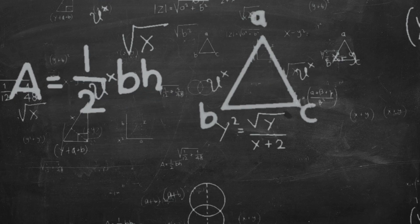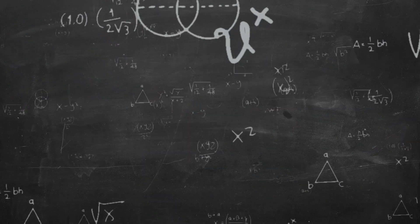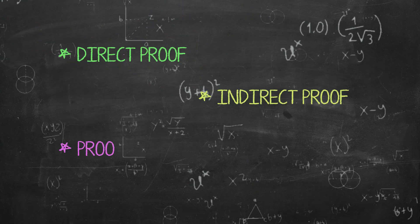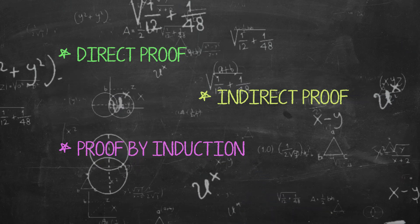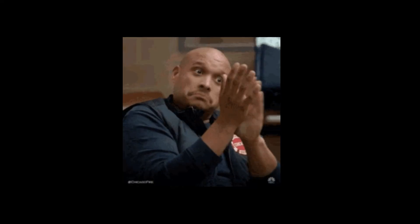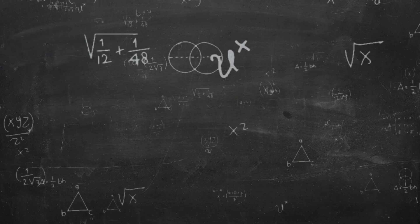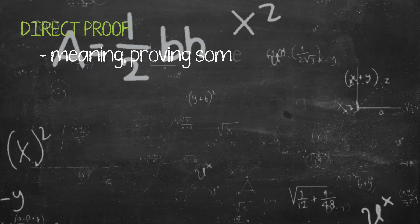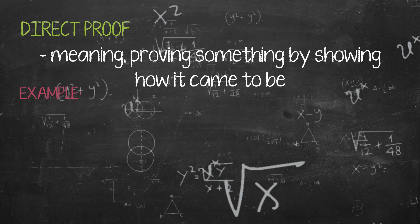For the types of mathematical proofs, we include direct proofs, indirect proof, and proof by induction, with corresponding examples to further understand. Direct proof means proving something by showing how it came to be.